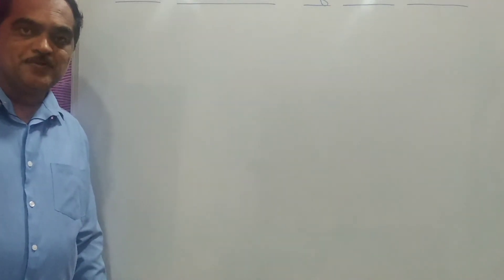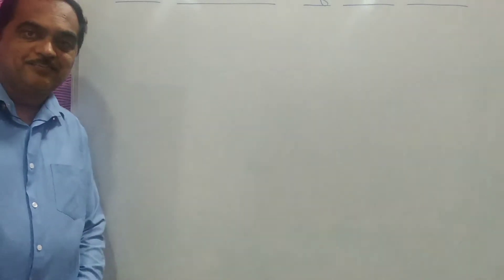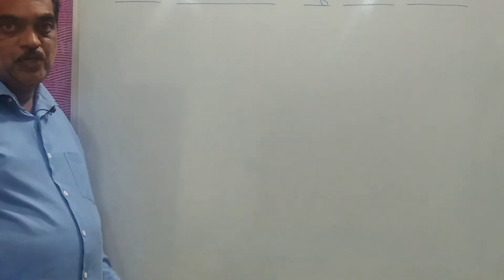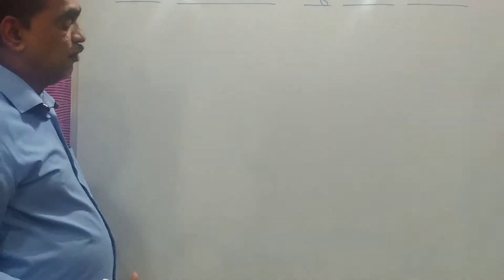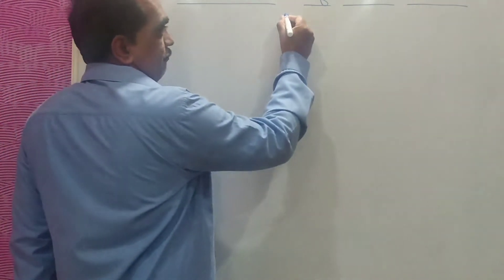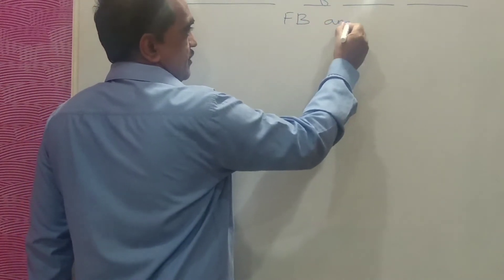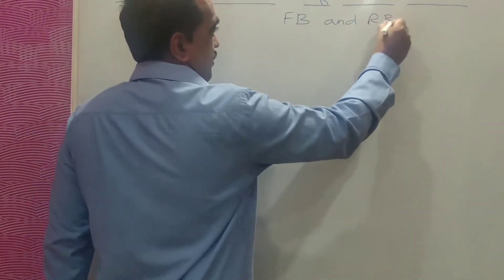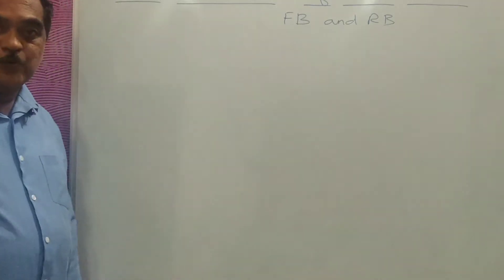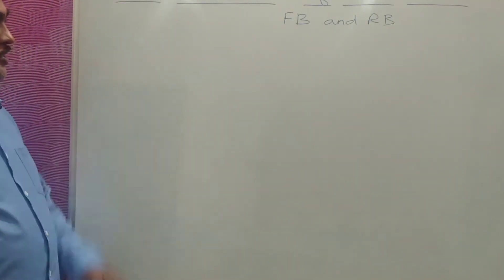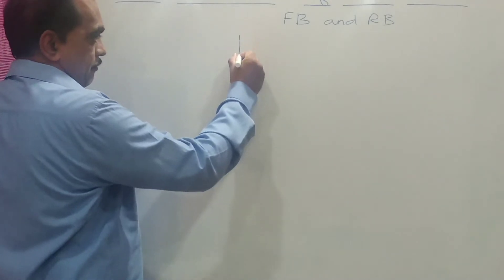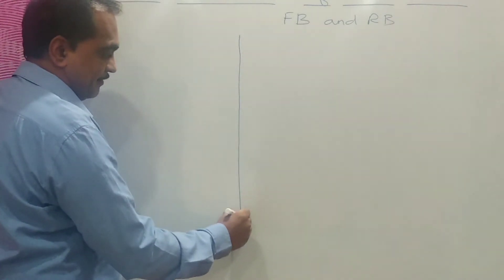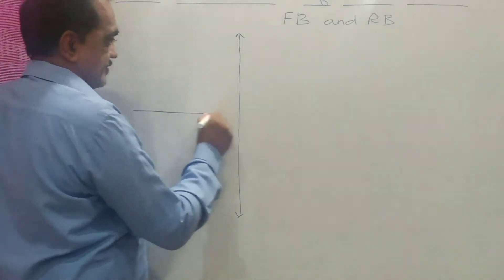Students, today we will see VI characteristics of Zener diode. VI characteristics means voltage current characteristics, and they can be formed if you know the forward bias and reverse bias condition of that particular diode. Now to plot this VI characteristics, we have to plot a graph of y-axis and x-axis.